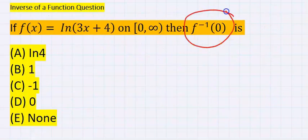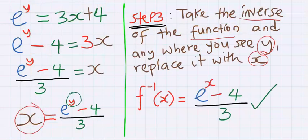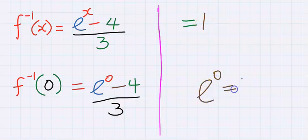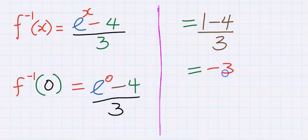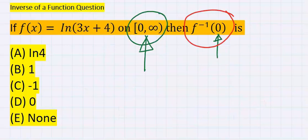From the question, zero is in the position of x, which is the first number in the domain from zero to infinity. So we replace x with zero. We then solve: e to the power of zero equals 1 — since anything to the power of zero is 1 — and we have 1 minus 4 divided by 3, which gives minus 3 divided by 3. Our final answer is minus 1, which corresponds to option C.